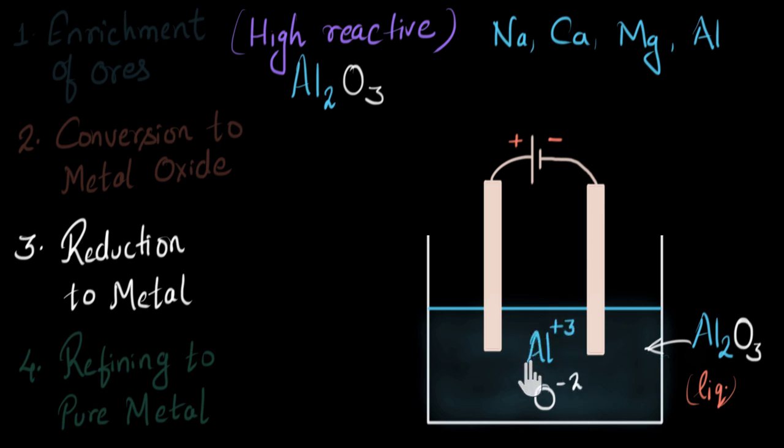We will get aluminium plus three ions and O minus two ions. Now the positive ion of aluminium, this will get attracted to the negative electrode. Over here, aluminium ion needs three electrons. It will take the three electrons from the negative electrode and will get converted to aluminium atom. And the aluminium atoms will get deposited on the negative electrode over here.